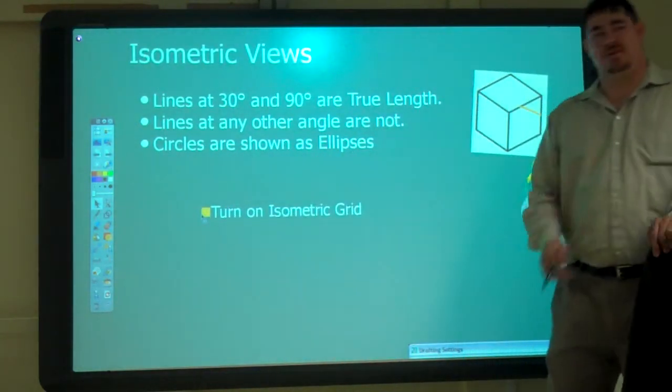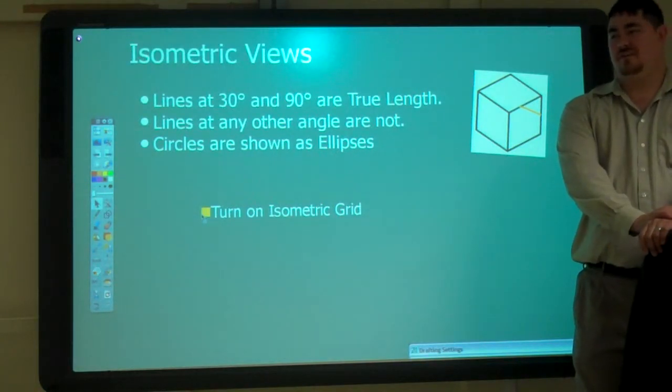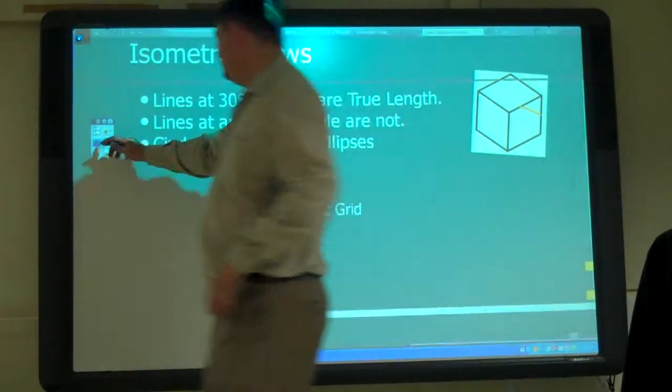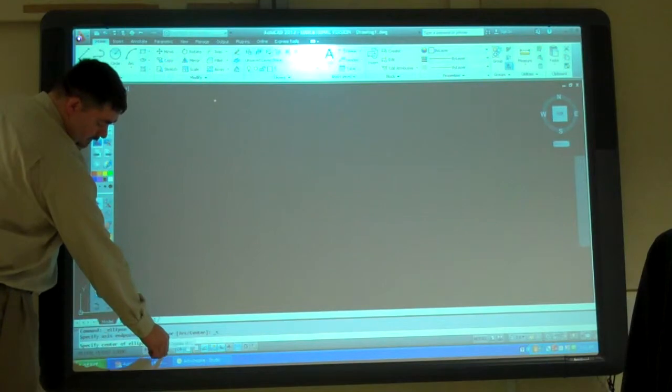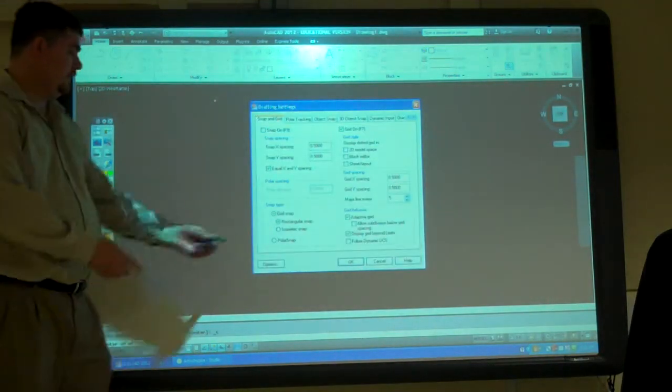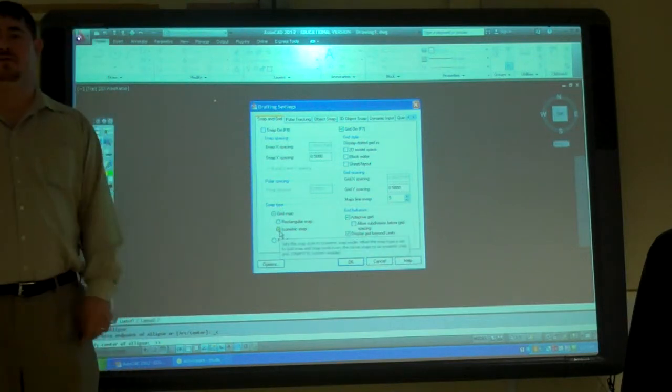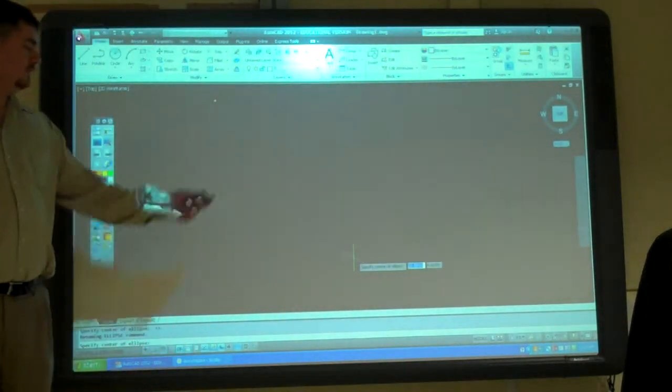We need to turn on the isometric grid. So any idea where to do that? Down in our options. We right click on the grid or the O-snaps or any of them. You go to settings. Isometric snap. So look at my cursor now.